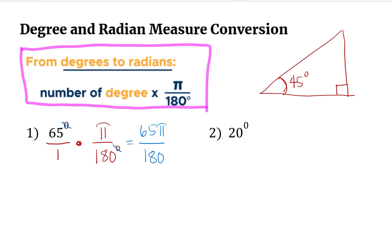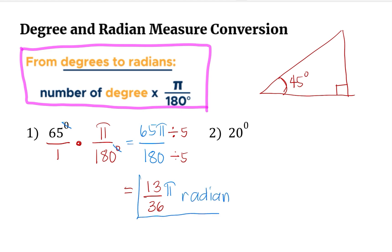So this gives us 65 pi over 180. Now we can do this using the calculator or manually. If we do it manually, we think about what number can divide 65 and 180 evenly, and that should be 5. So we divide 65 by 5, which equals 13. We divide 180 by 5, which equals 36. We drop pi and that becomes the unit. So 65 degrees is equal to 13 over 36 pi radians.